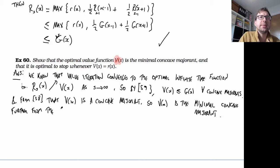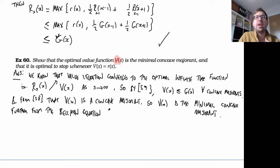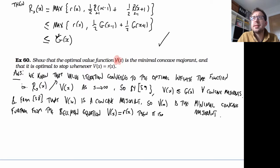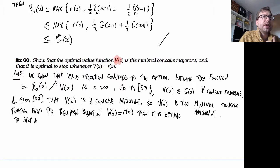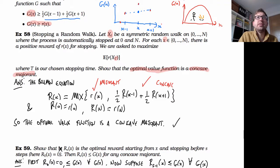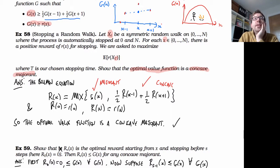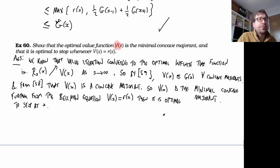From the Bellman equation, we know that if v(x) = r(x), then among the actions stop or continue, stopping is at least as good as continuing. So whenever the minimal concave majorant equals r(x), it is optimal to stop at state x.